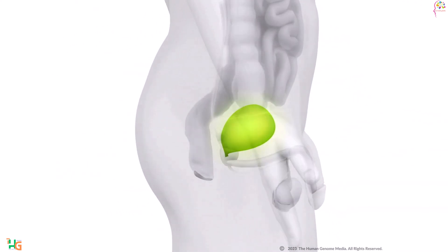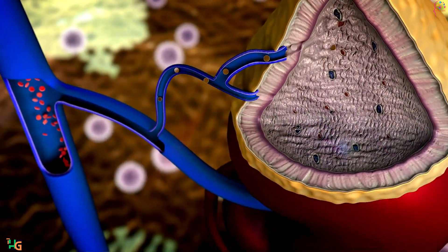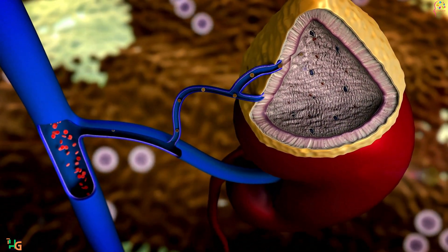The prostate gland secretes prostate fluid, which is a component of semen, aiding in sperm motility and viability.